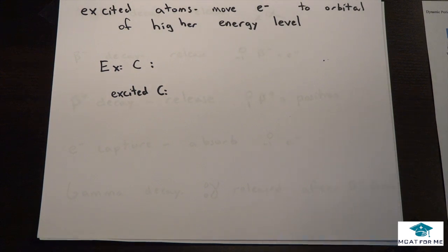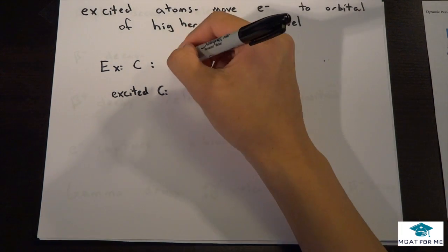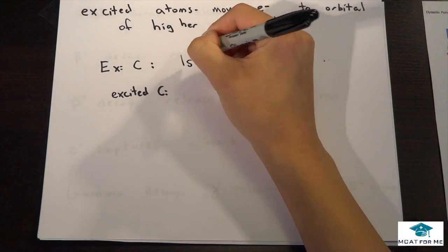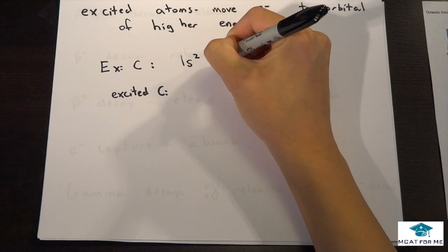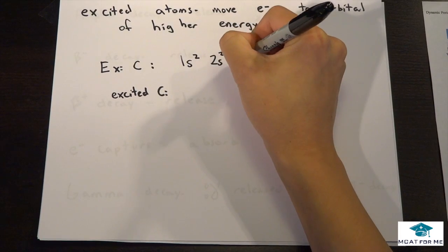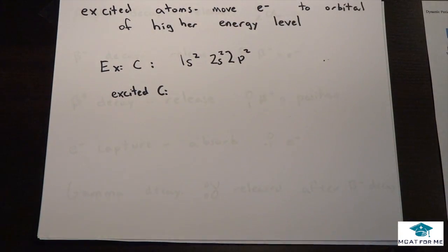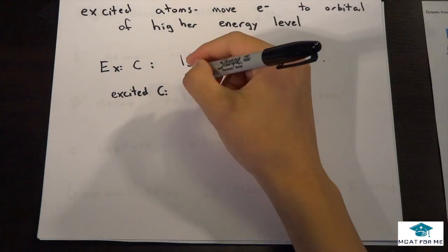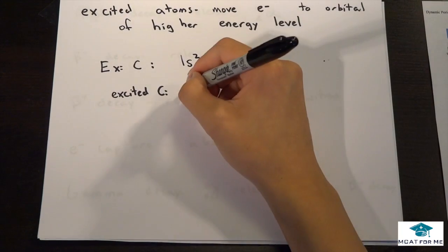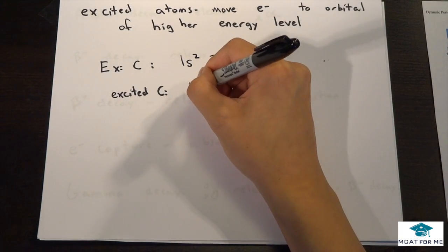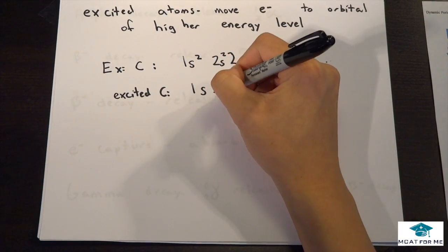...are excited atoms. That's when electrons move from their normal orbital to a higher energy level orbital. Let's take, for example, carbon, which is 1s² 2s² 2p². If we had an excited carbon, what would that look like? Well, it could look like a couple of things.